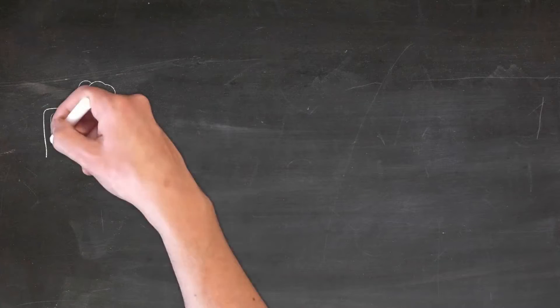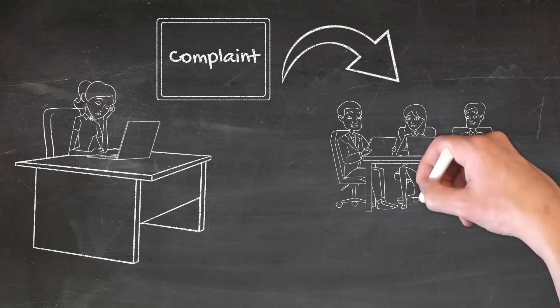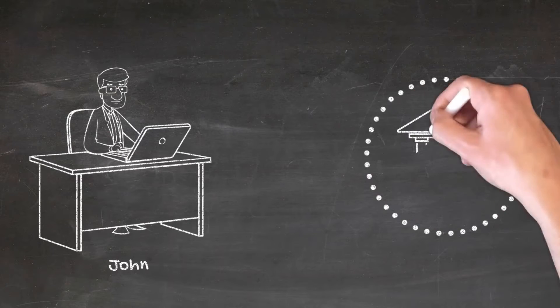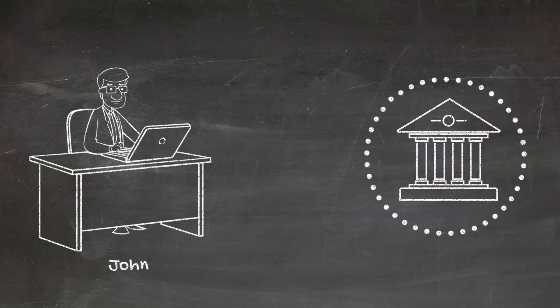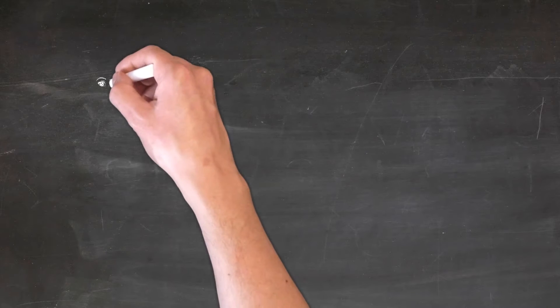However, Jennifer is not satisfied and escalates the complaint to the Consumer Financial Protection Bureau (CFPB). John is the customer complaints officer and Rob's supervisor. He noticed that lately such incidents have been a costly affair for Bank One.